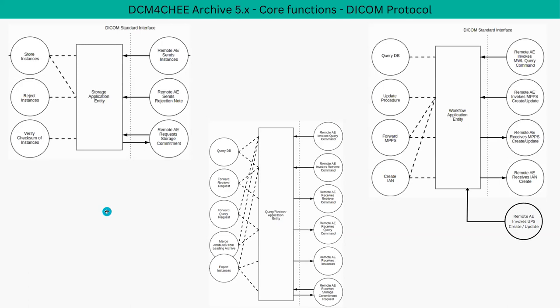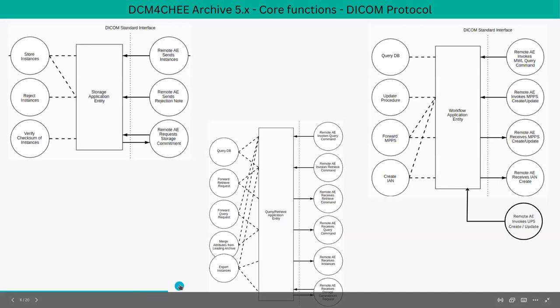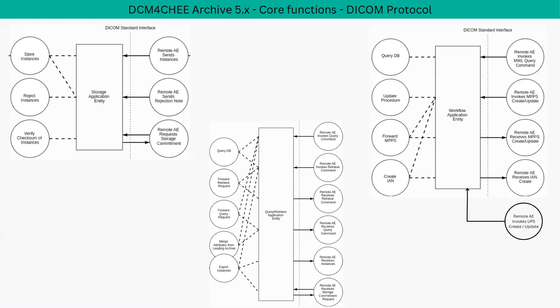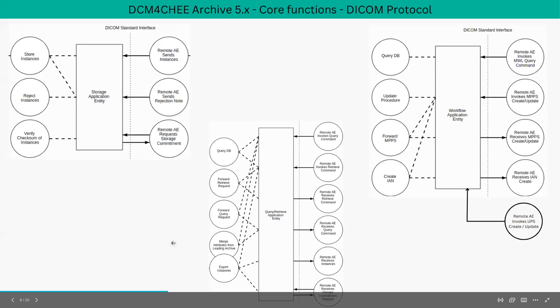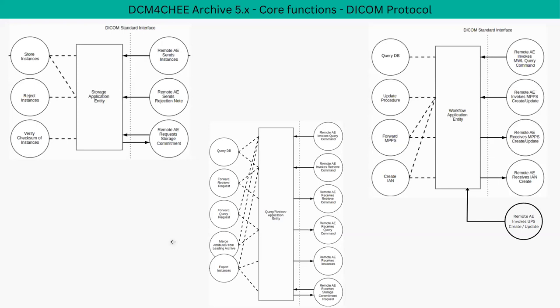The core functions of the archive with respect to the DICOM protocol involve three main application entities. The storage application entity handles storage of DICOM instances and rejection nodes, and can respond to and process storage commitment requests from modalities. The query/retrieve AE handles DICOM C-Find and C-Move requests, sending back query responses and allowing retrieval of DICOM instances to desired destinations. Both storage and query/retrieve AEs also support anonymizing data on storage or on query/retrieve, with features like attribute coercions.